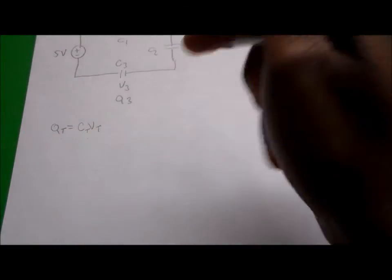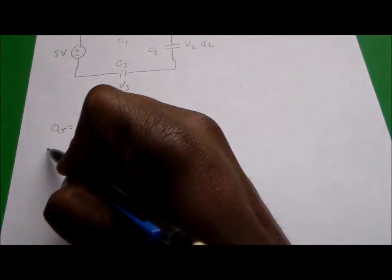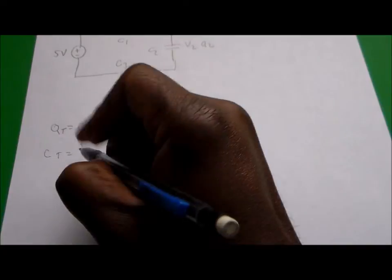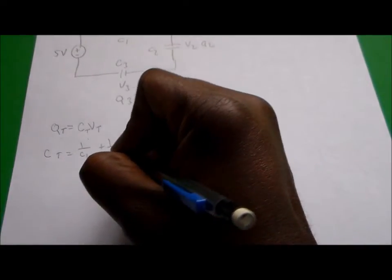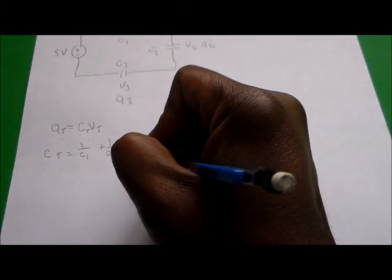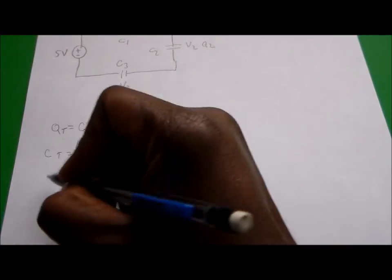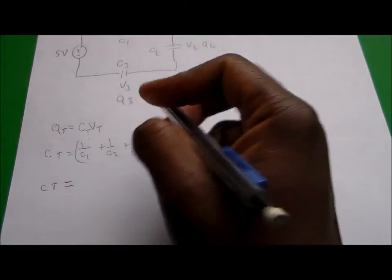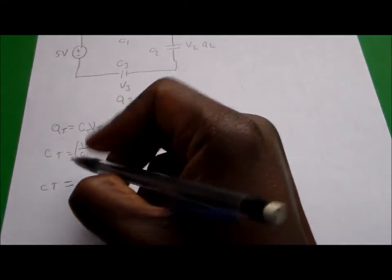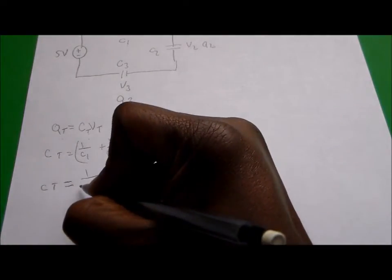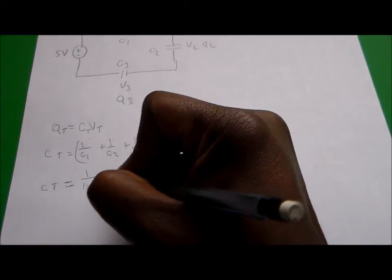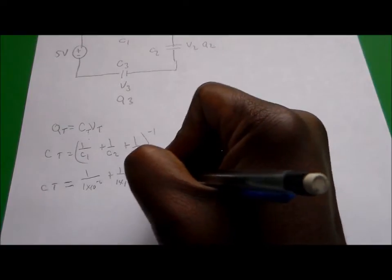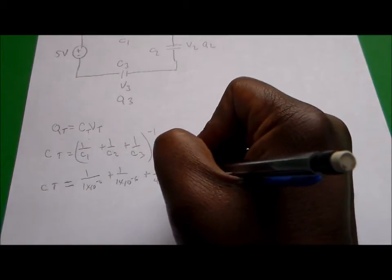In order to find the total capacitance, remember that total capacitance in a series circuit equals one over C1 plus one over C2 plus one over C3, and then we take the inverse of that. So this equals one over one times ten to the minus six, plus one over one times ten to the minus six, plus one over 4.7 times ten to the minus six, and then take the inverse.